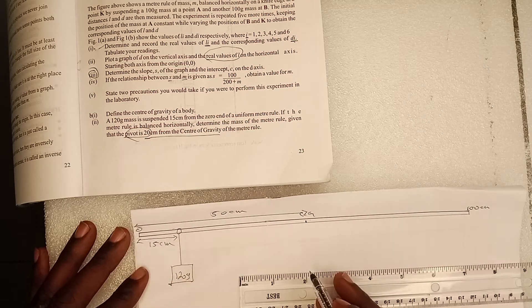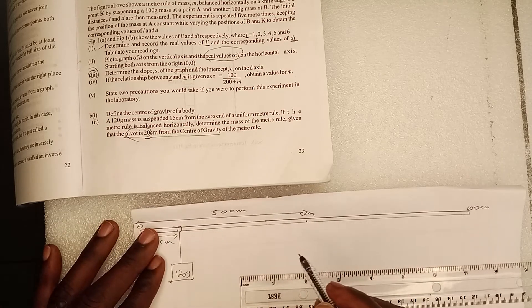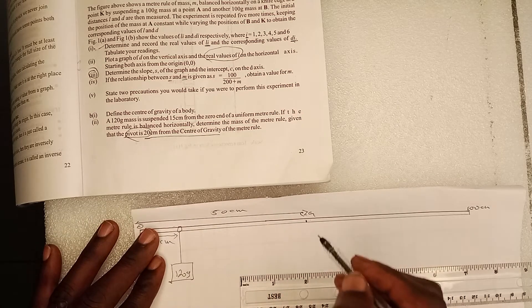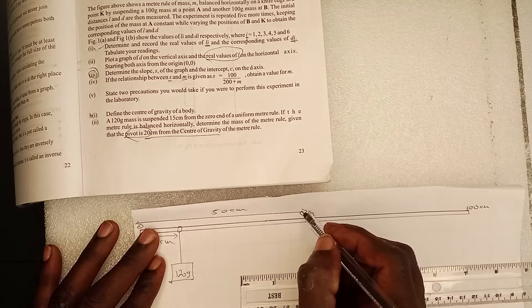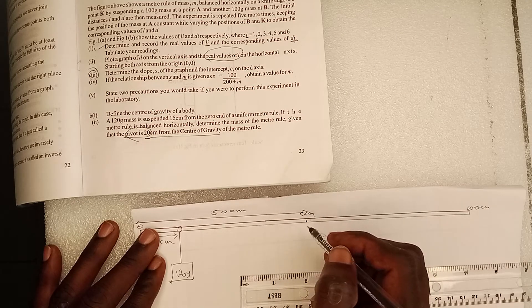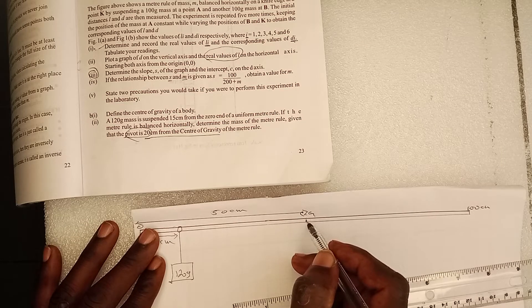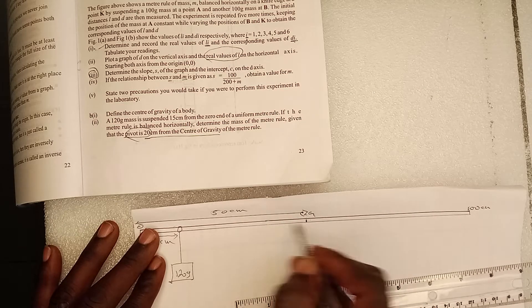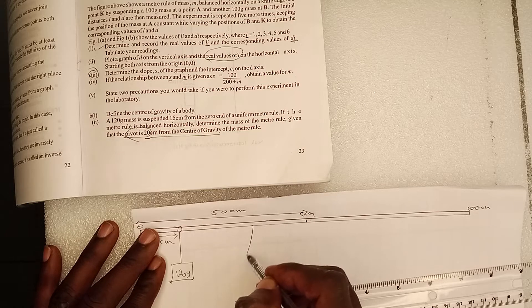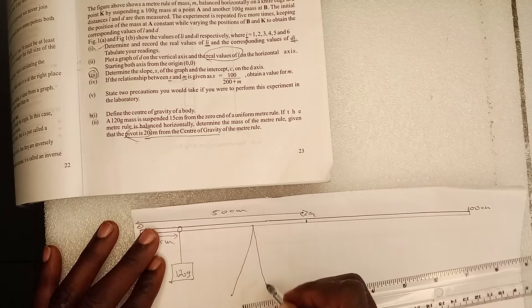Good. Now the pivot was 20 cm from the CG, meaning we take our reading with reference to this particular point. So 20 cm from here to here is supposed to be our 20 cm. So this is where the pivot is.